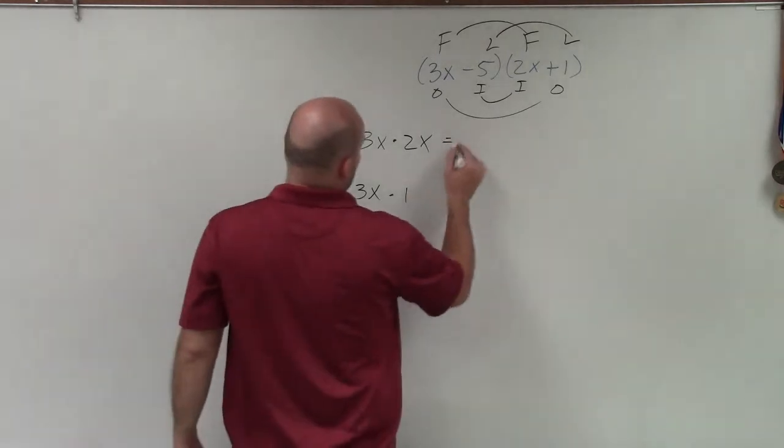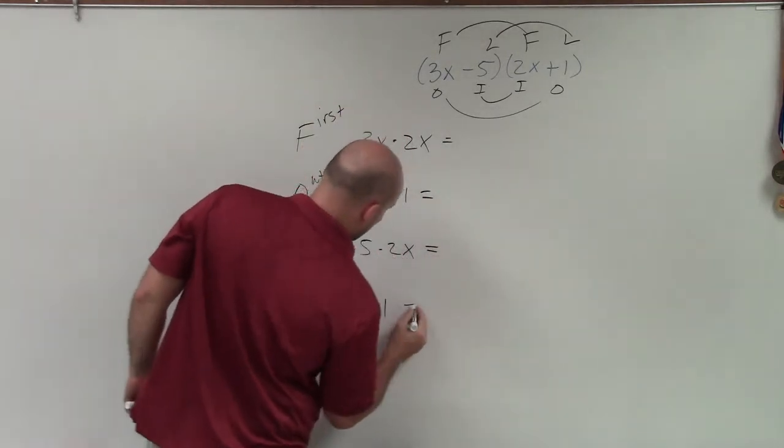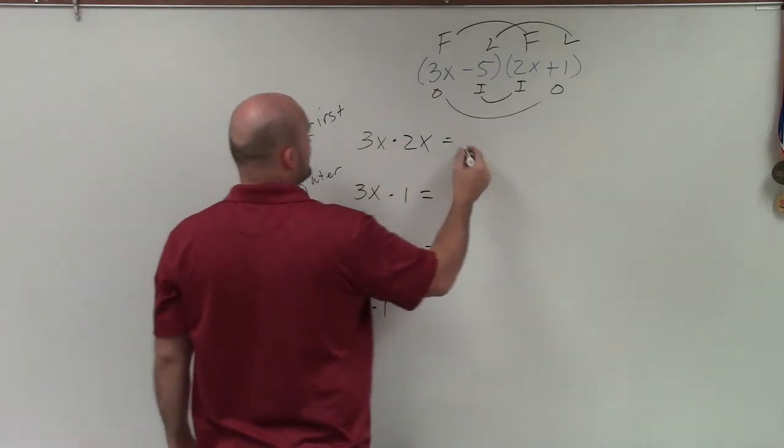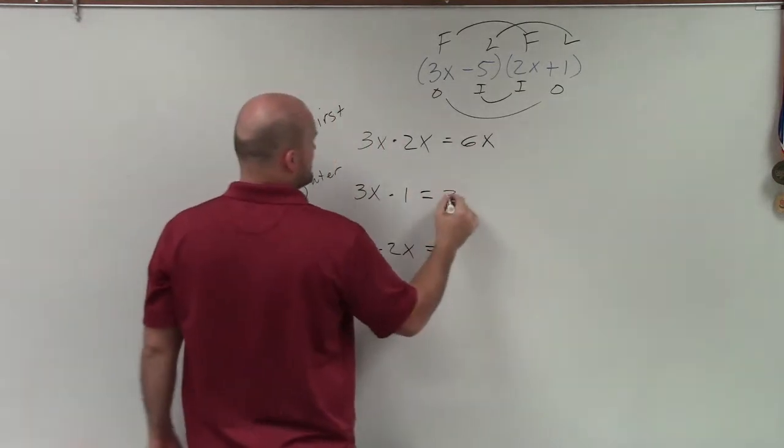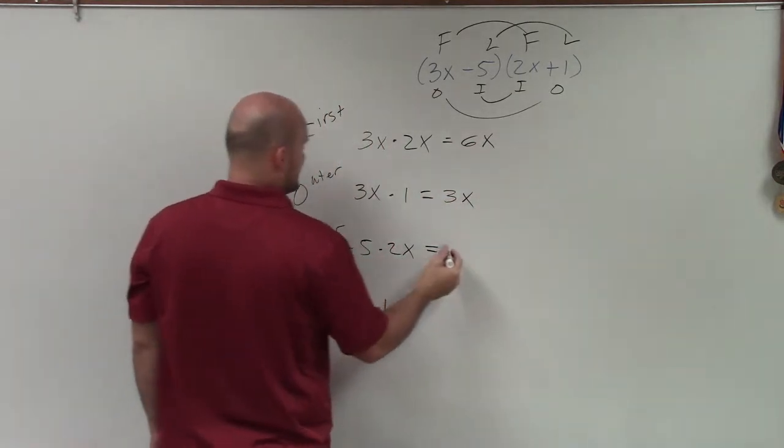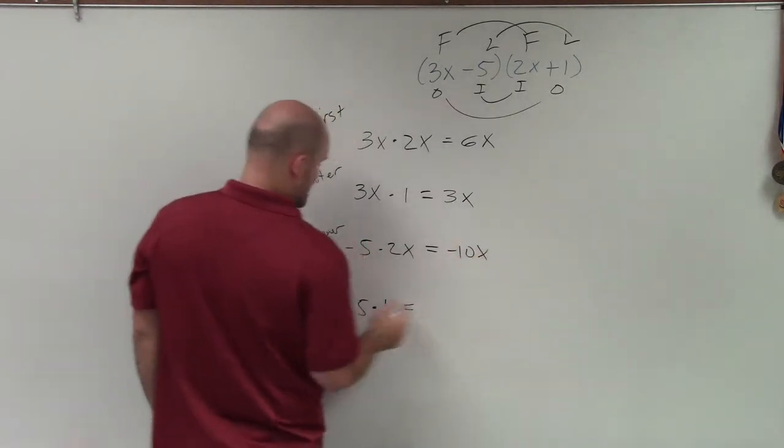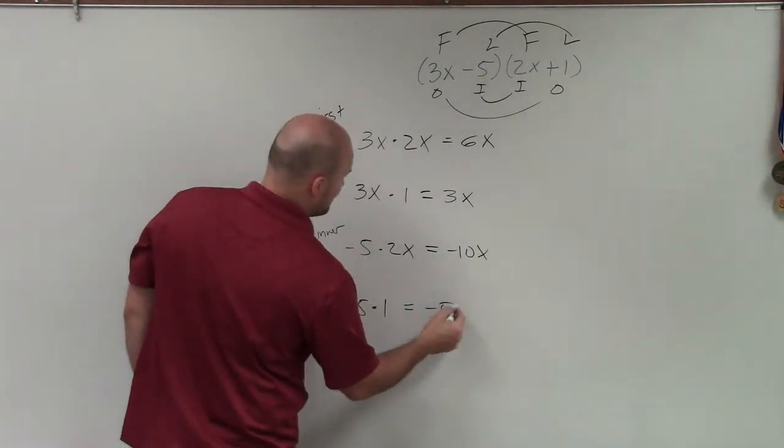Cool. So now, ladies and gentlemen, all I'm simply going to do is just multiply and see my answer. So 3x times 2x is 6x. 3x times 1 is 3x. Negative 5 times 2x is negative 10x. And negative 5 times 1 is negative 5.